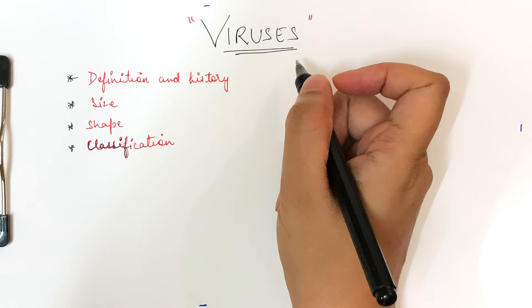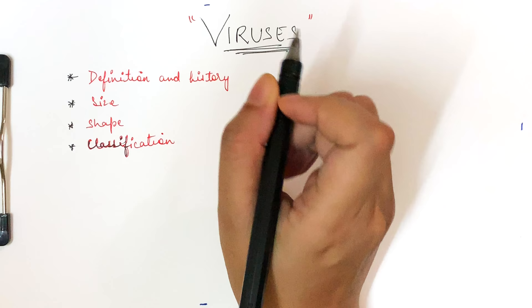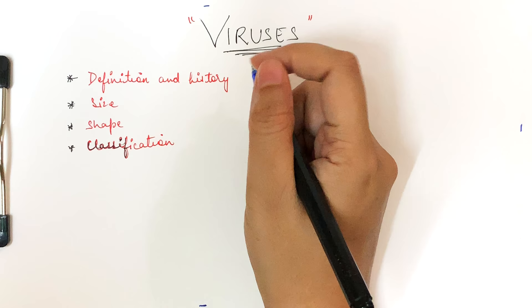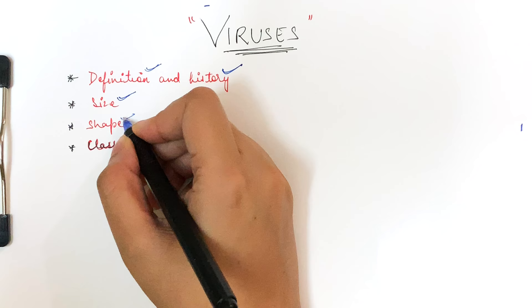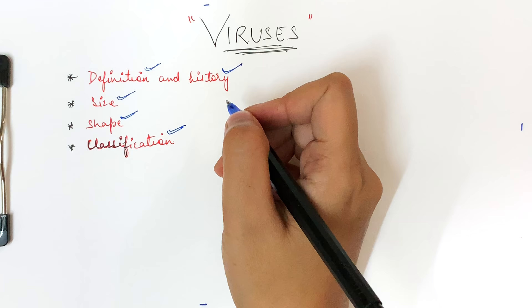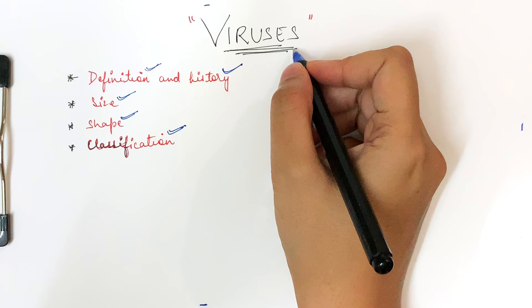In this video we are going to discuss viruses — specifically the definition of virus, what the history behind it is and how it was discovered, then we'll discuss the size, shape, and classification of viruses.